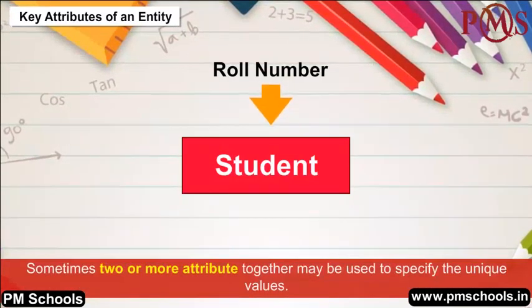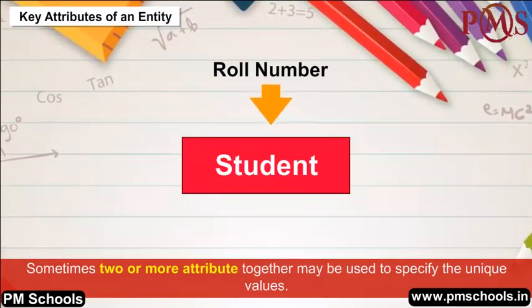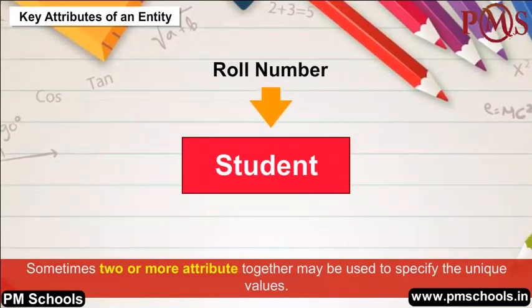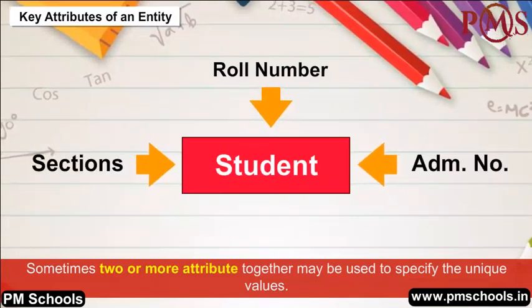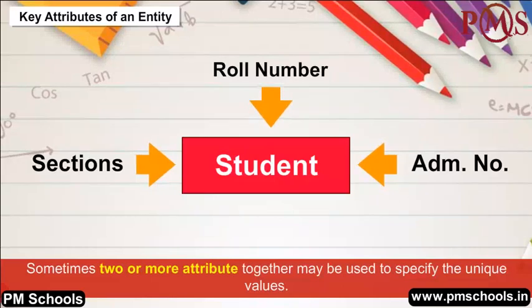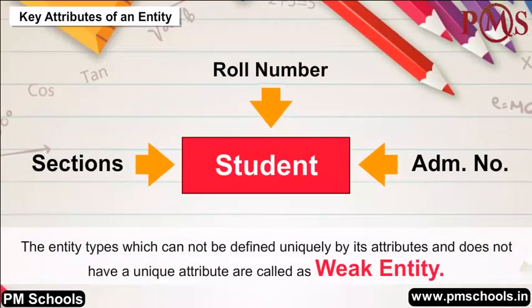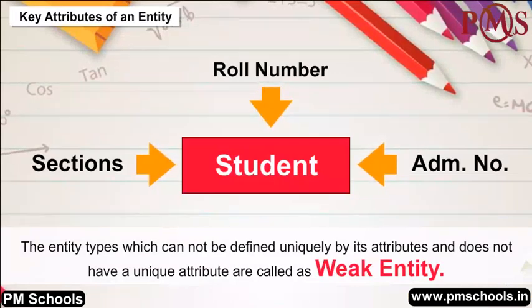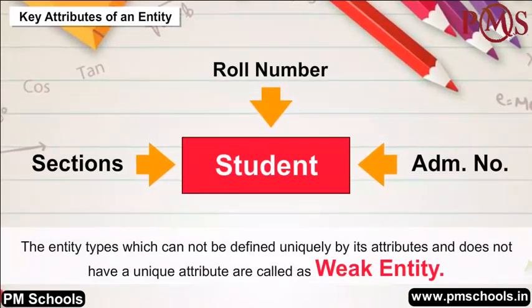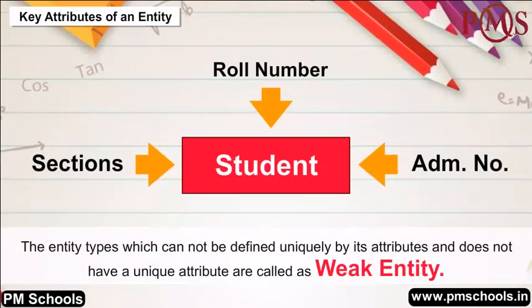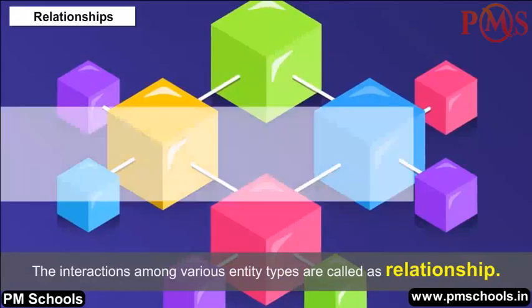Sometimes two or more attributes together may be used to specify unique values. For example, the student entity type can have sections and roll number as composite keys. The entity types which cannot be defined uniquely by their attributes and do not have a unique attribute are called weak entities.